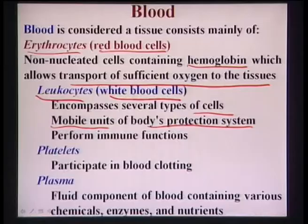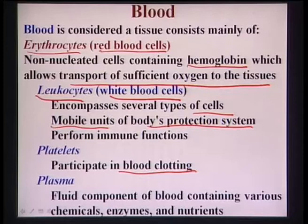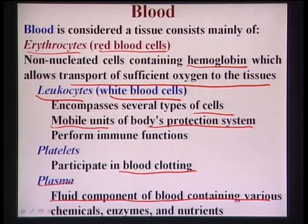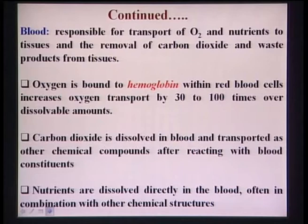Blood platelets participate in blood clotting. The fourth blood component is plasma - like an extracellular matrix - a fluid component of blood. Just as for any tissue there is a matrix where different cells aggregate together, in blood it is the plasma that contains various chemicals, enzymes, and nutrients essential for the survival of cells in blood. Blood is also responsible for transport of oxygen and nutrients to tissues and removal of carbon dioxide and waste products from tissues.